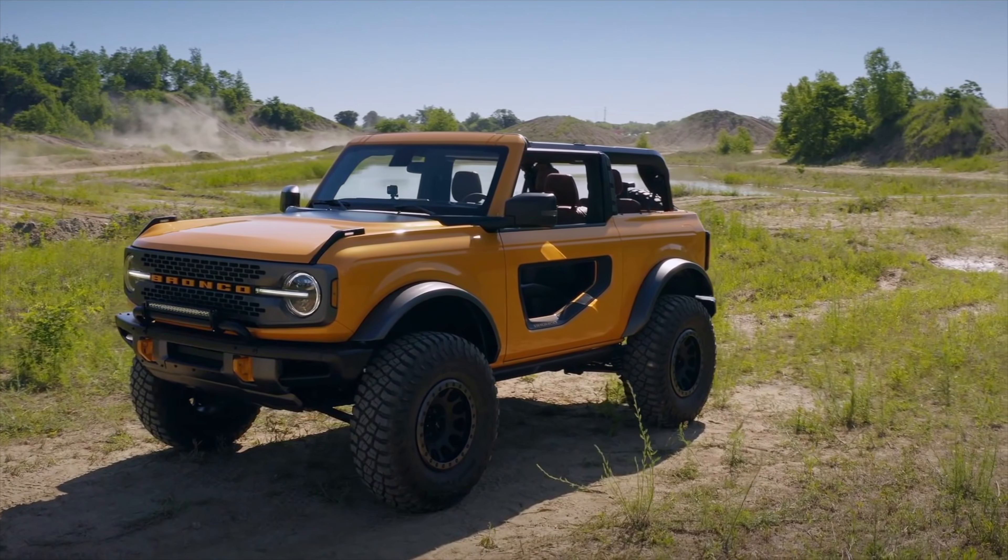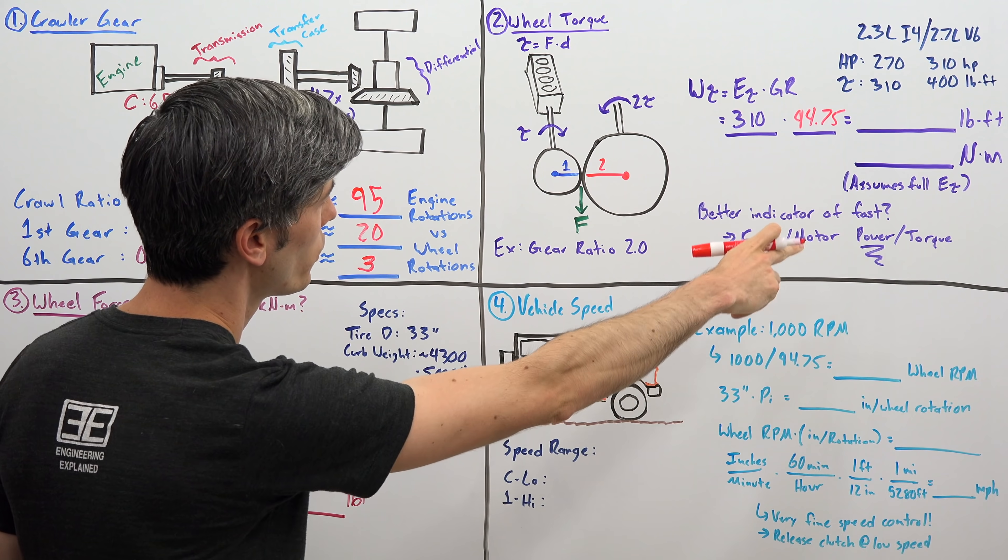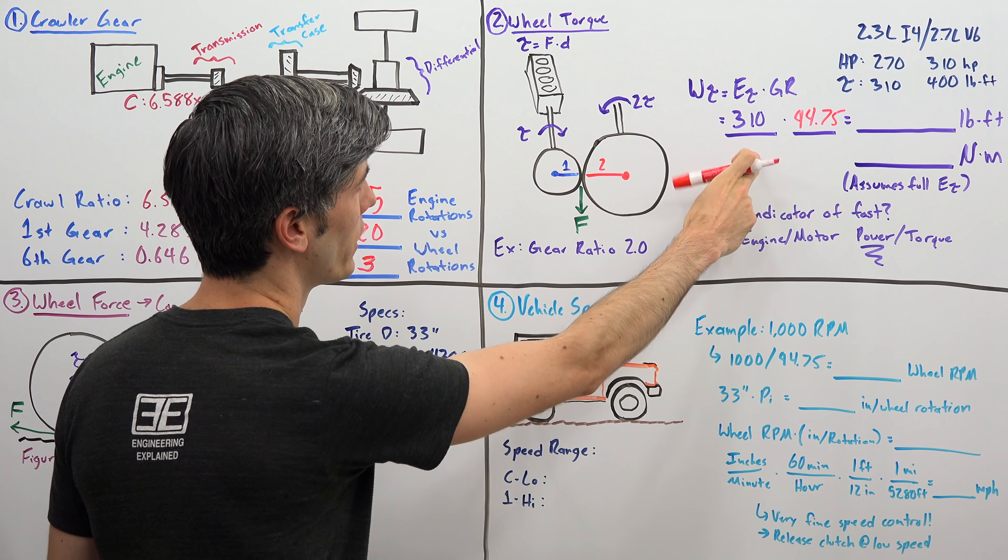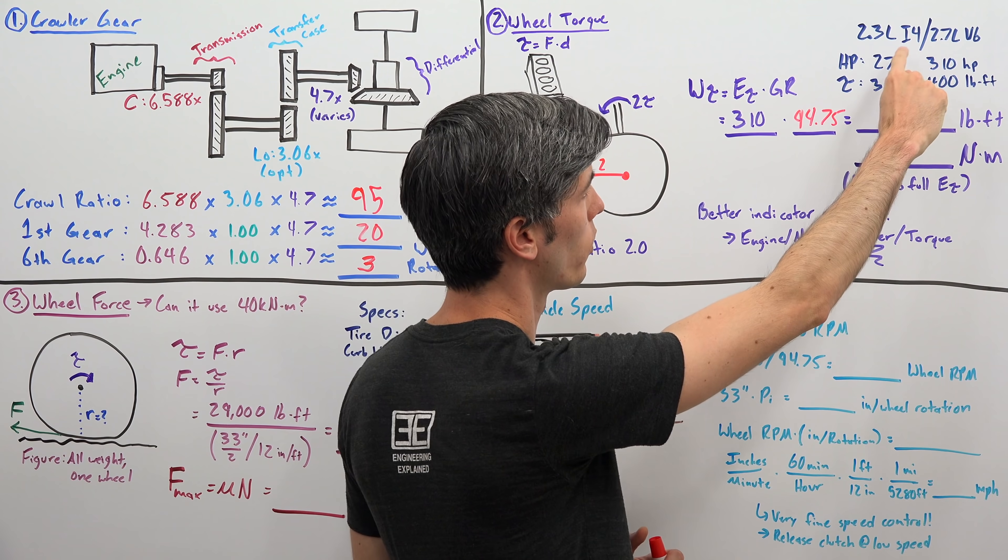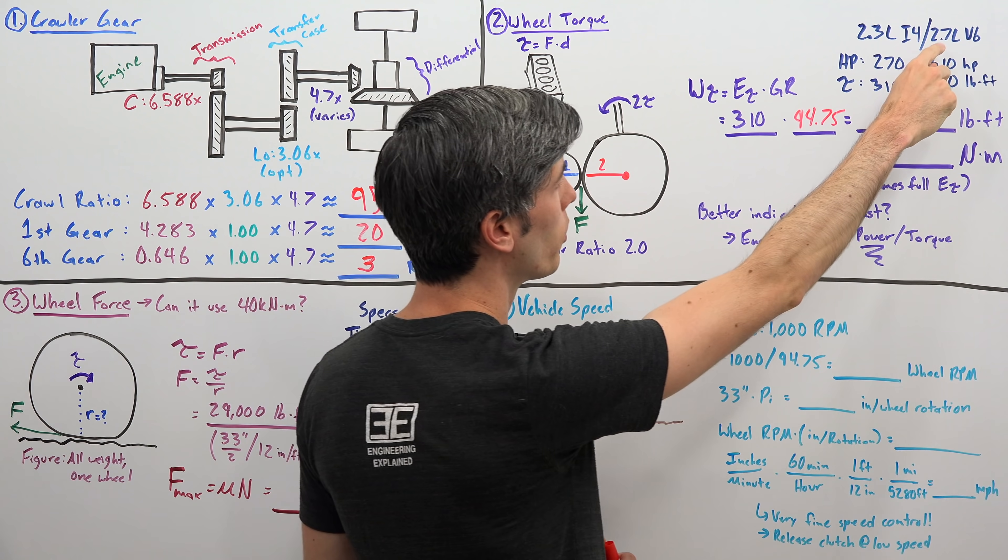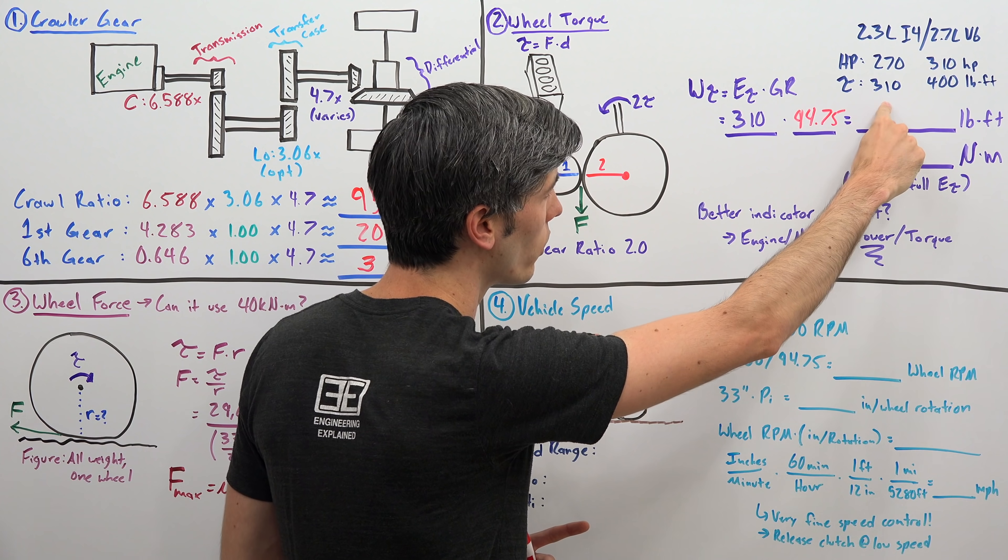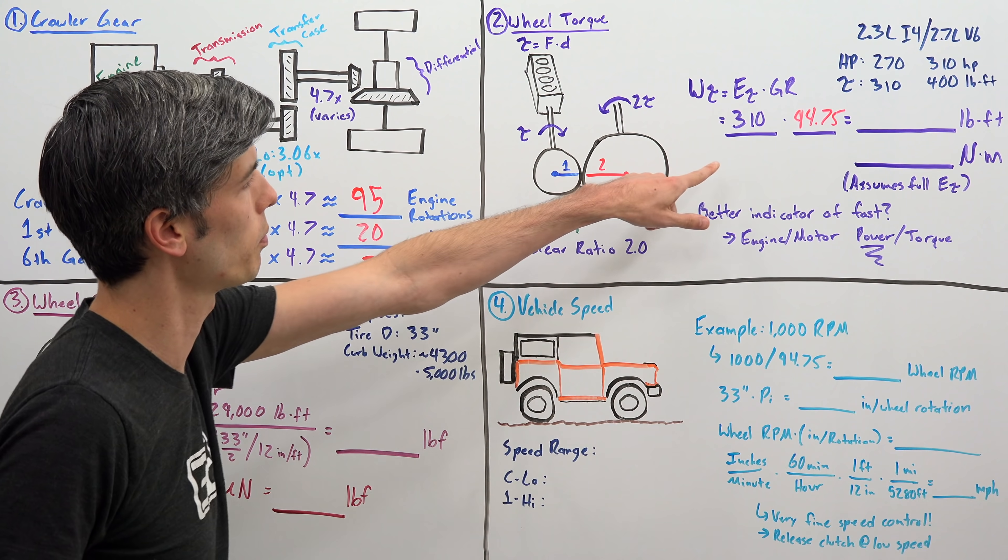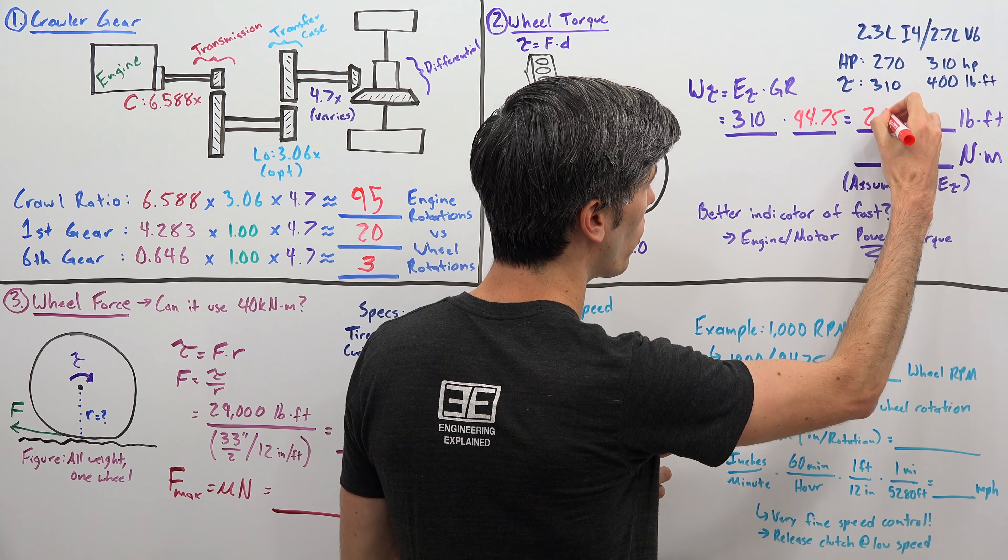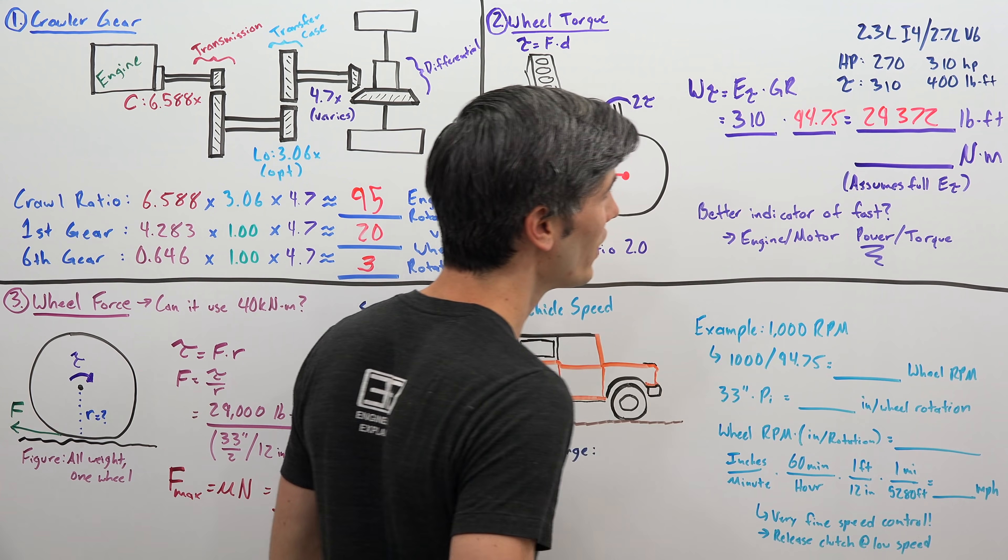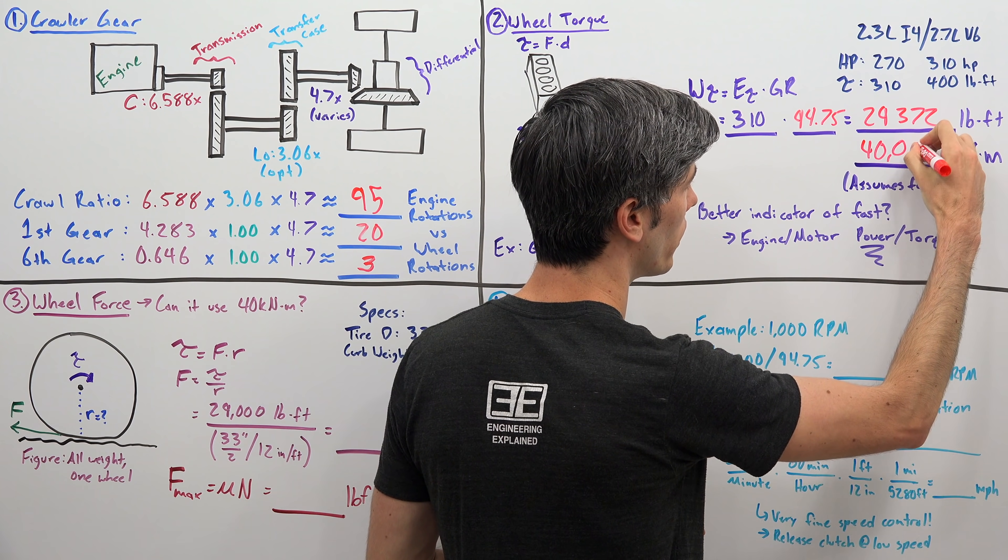So how does this apply to the Ford Bronco? Well we can go back to our crawl ratio of 95, 94.75, that's our crawl ratio, and then we're multiplying that by our engine torque to find out what our wheel torque is. Our engine torque is 310 lb-ft, there are two engine options for the Ford Bronco, so a 2.3 liter inline 4-cylinder, or a 2.7 liter V6, the 2.3 liter is the only one that comes with the manual transmission, you get 270 horsepower, 310 lb-ft of torque. So you multiply that 310 by 94.75, and that gives you a wheel torque of 29,372 lb-ft of torque. And for the metric folks out there, this is about 40,000 Nm.